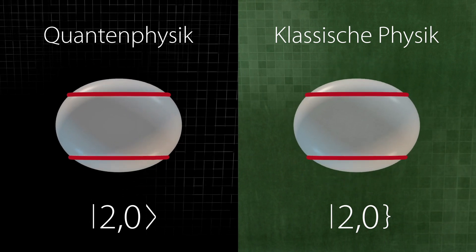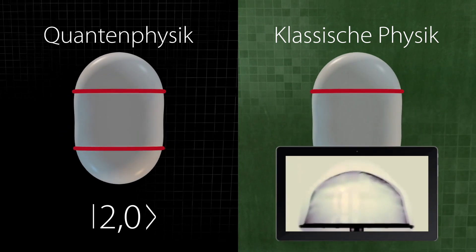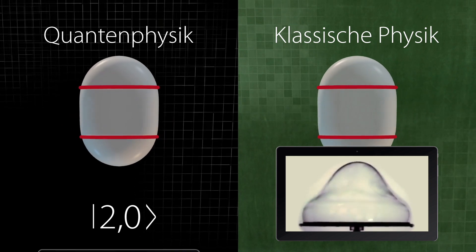There is one crucial difference, though. In classical physics, vibrational states are directly observable. They are real vibrations on a spherical surface, such as a soap bubble.